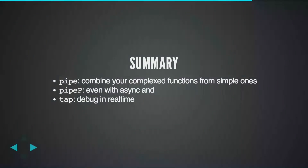Summary: if you have simple functions, you can combine them to make complex stuff with the help of pipe, which takes a lot of functions and returns a function that takes a value and passes it through all the functions you provided. Pipe does the same but for asynchronous programming and uses promises. And tap will help you debug your functional programming code.